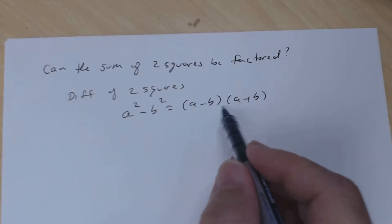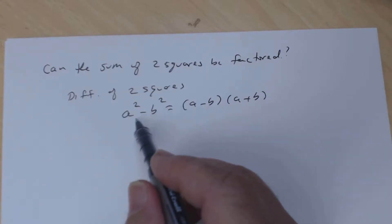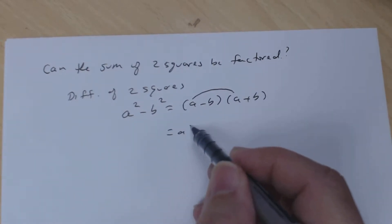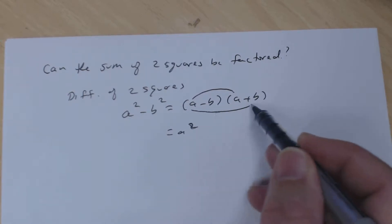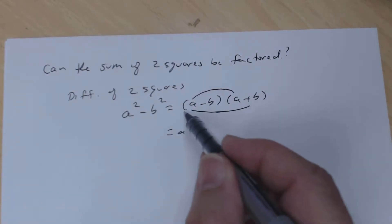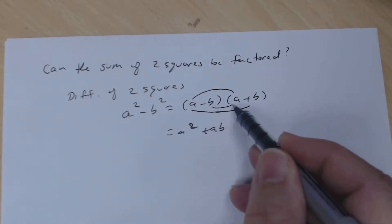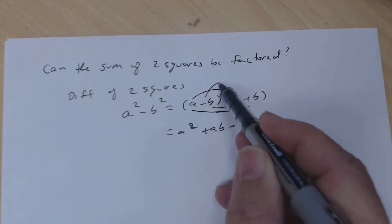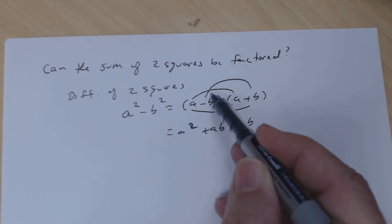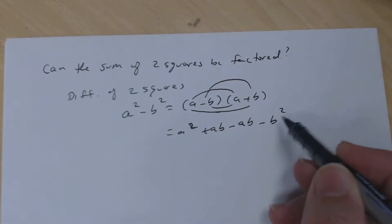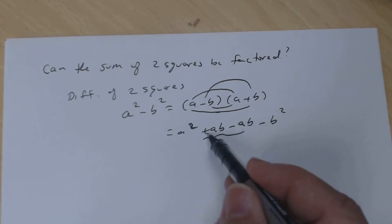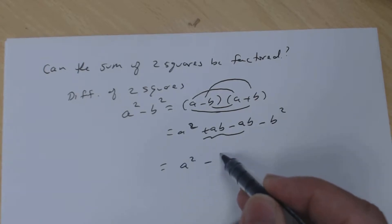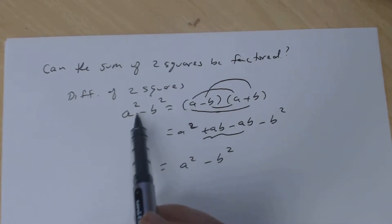You can always FOIL it out to check. First terms: a times a is a². Outer: a times positive b is ab. Inner: negative b times a is negative ab. Last: negative b times positive b is negative b². When you combine like terms, the ab terms are opposites and cancel, leaving a² - b².